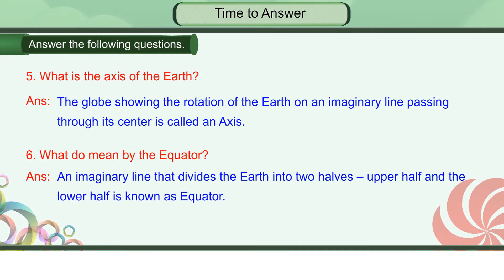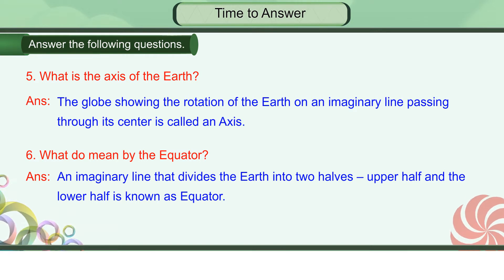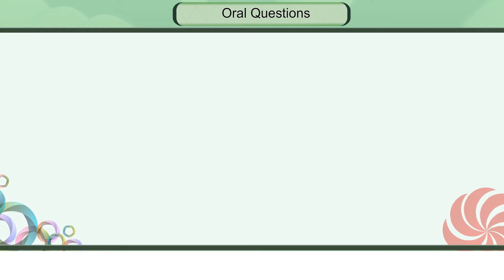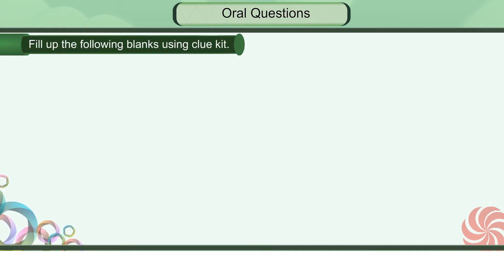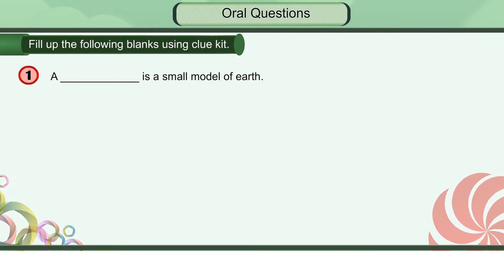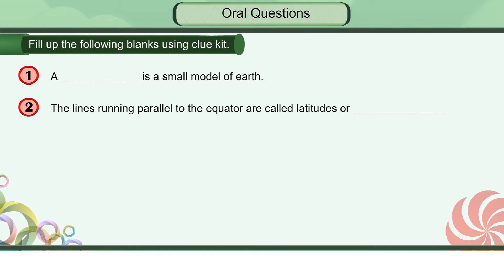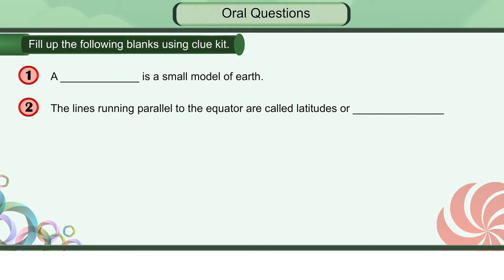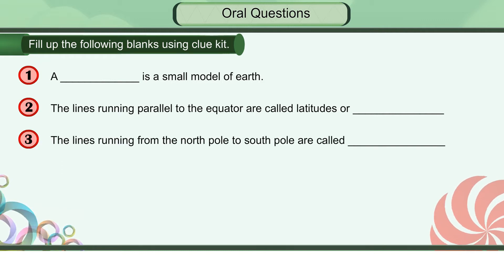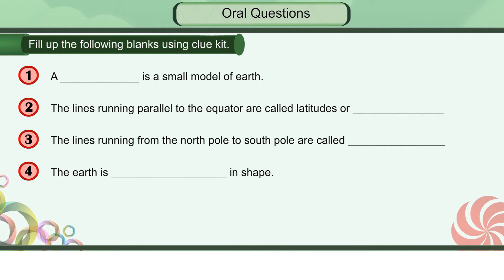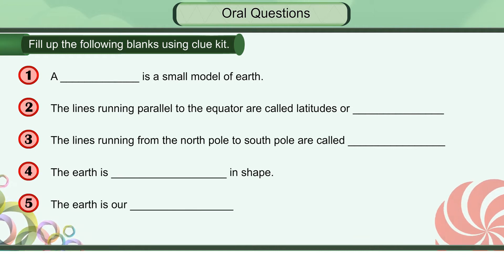Oral questions for S.A.: Fill up the following blanks using the clue kit. A ___ is a small model of the Earth. The lines running parallel to the equator are called latitudes or ___. The lines running from the North Pole to the South Pole are called ___. The Earth is ___ in shape. The Earth is our ___. Clue kit: Home, Spherical, Longitudes, Parallels, Globe.